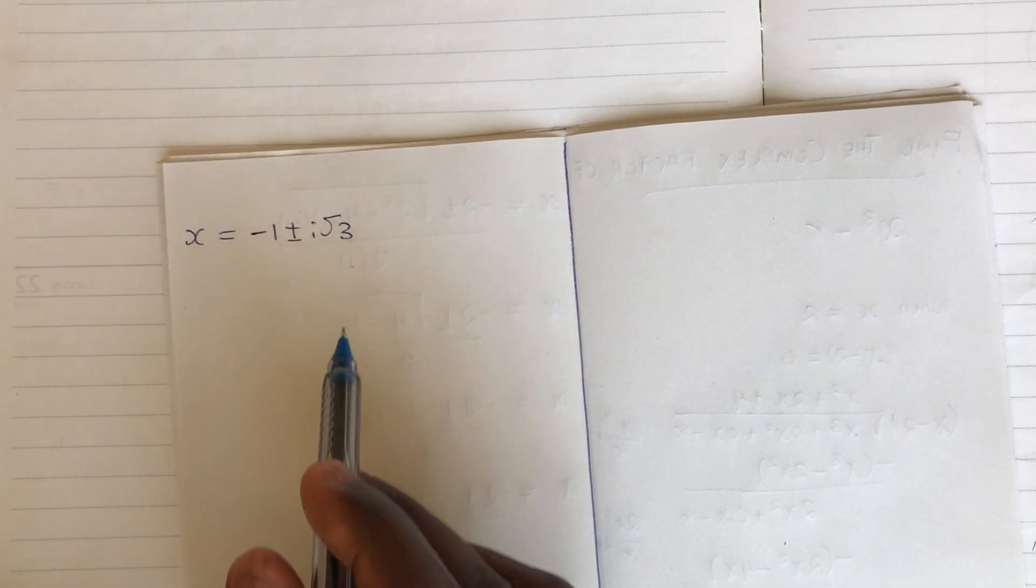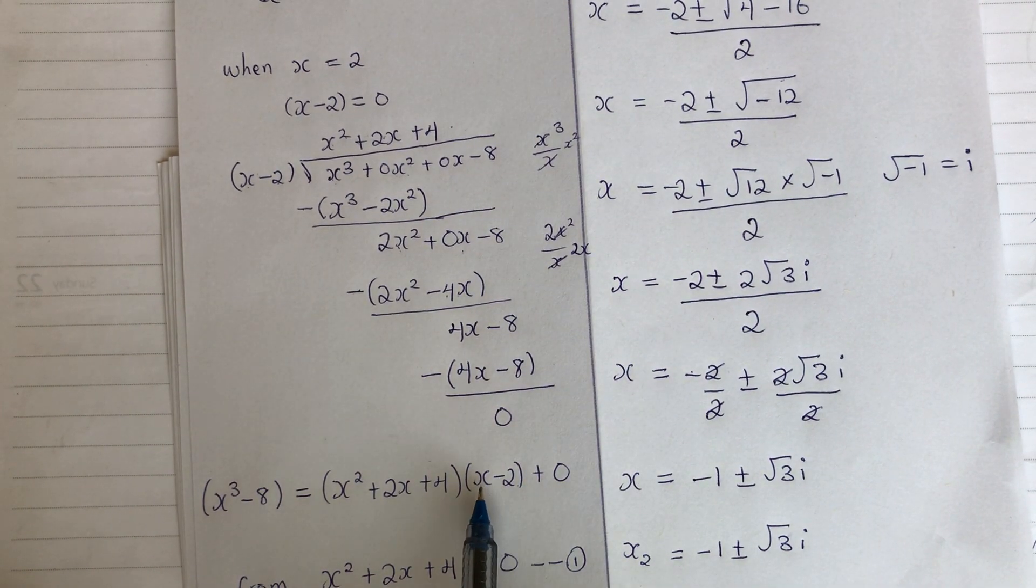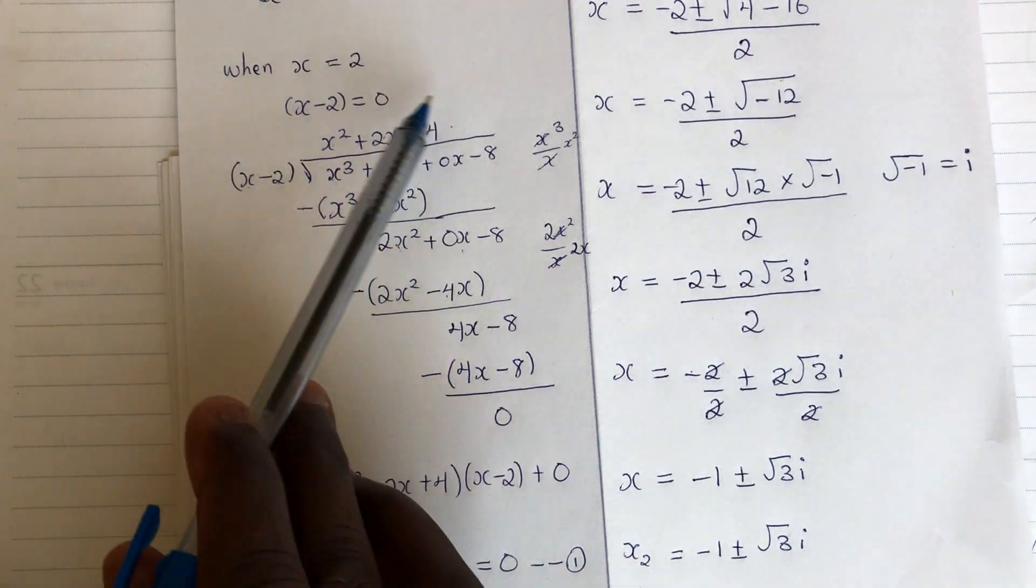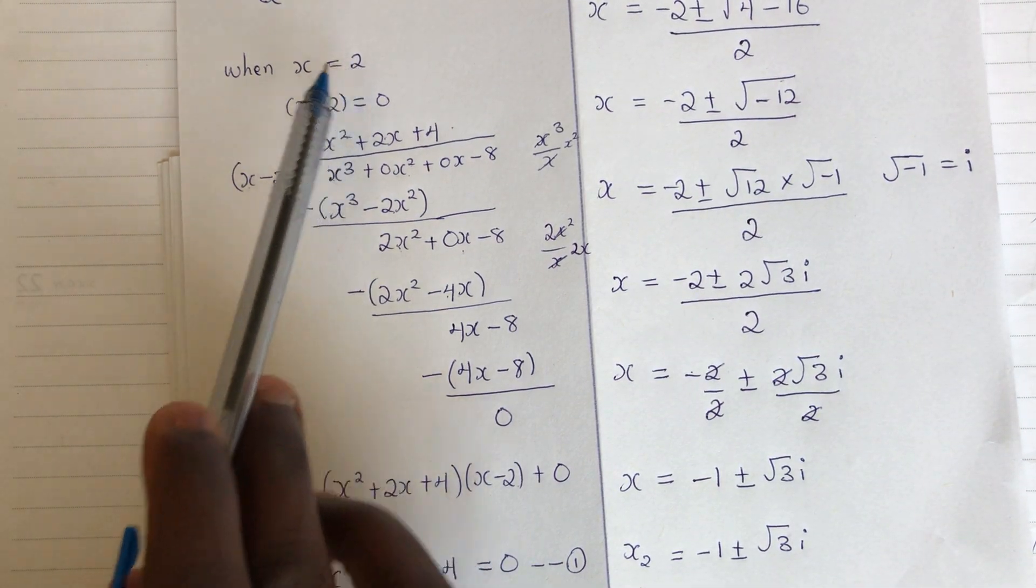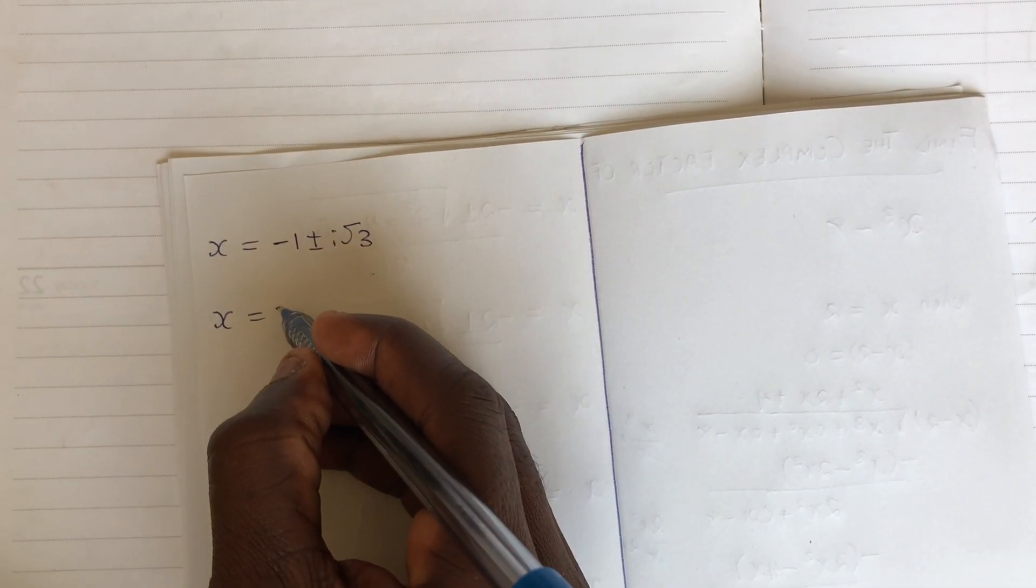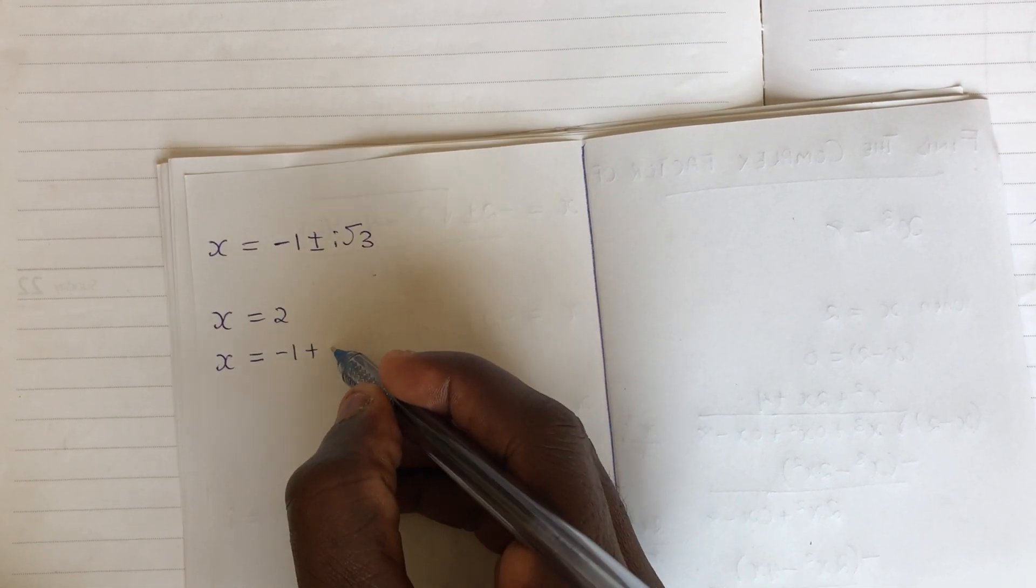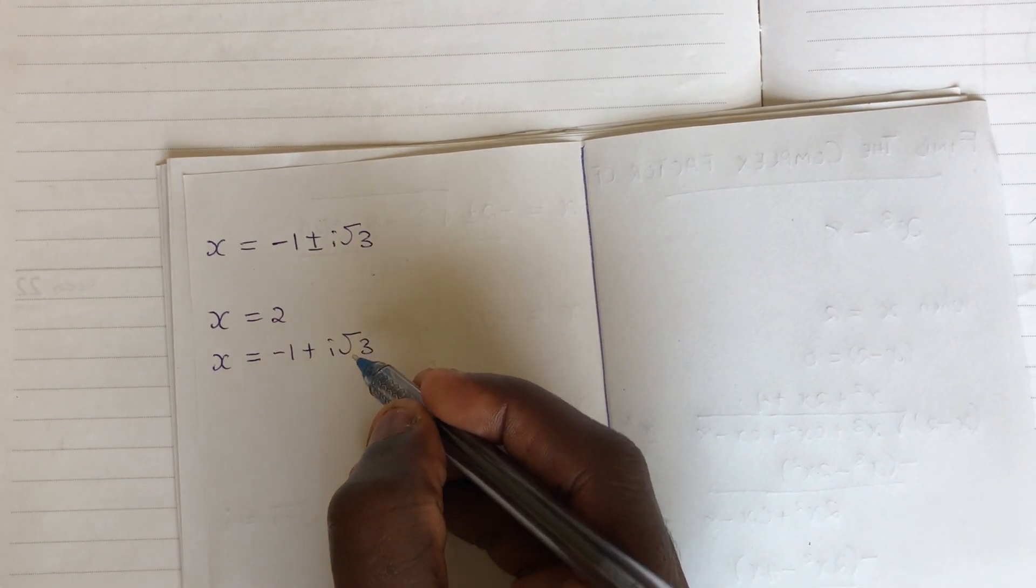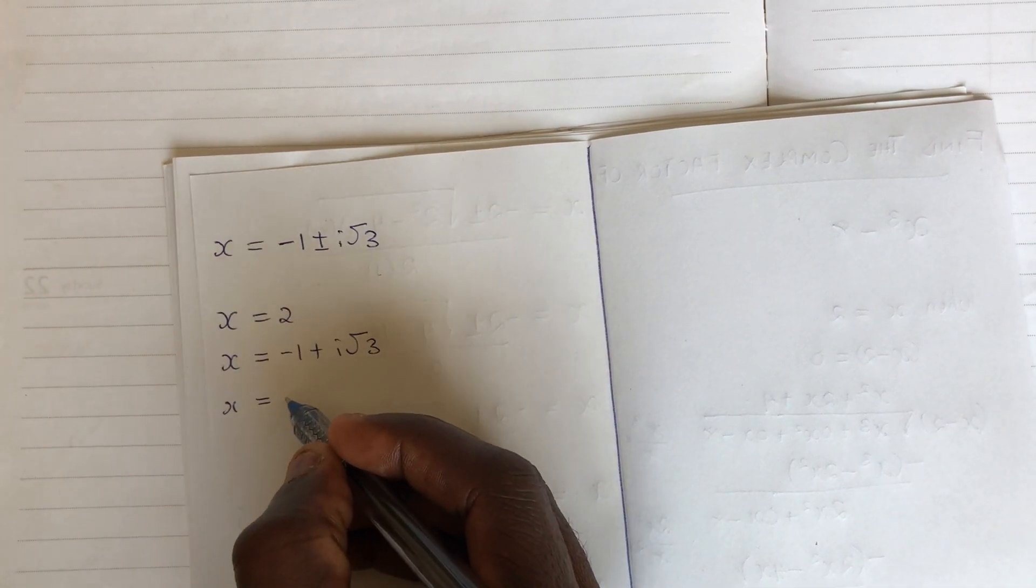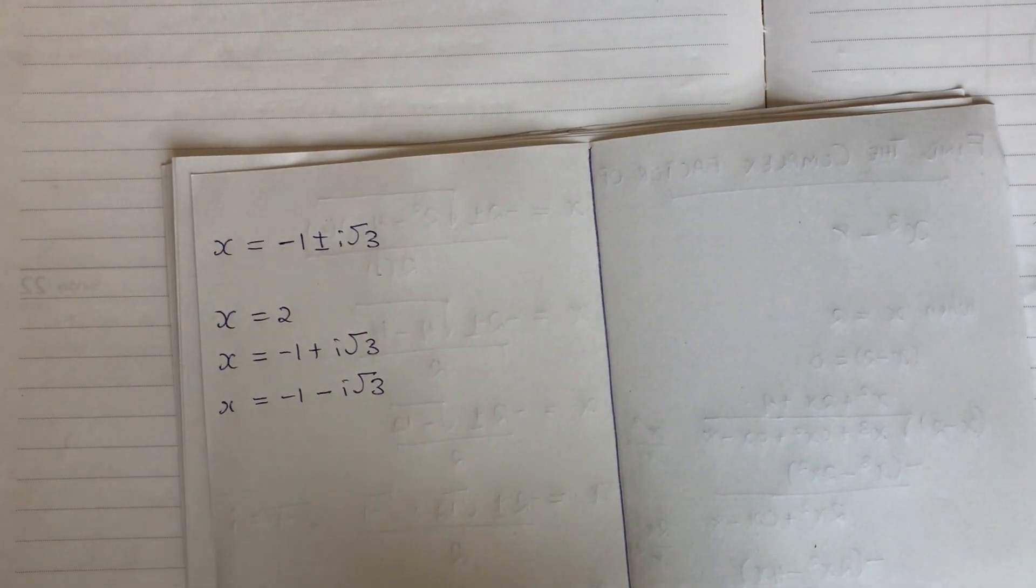So now, this is our root. One is positive, one is negative. But don't forget that we also have a root here, x minus 2, which is our common factor in the beginning. We got 2. x is equal to 2. So it is part of the calculation. So we have x is equal to 2, x is equal to negative 1 plus i root 3, and then x is equal to negative 1 minus i root 3.